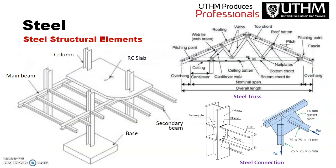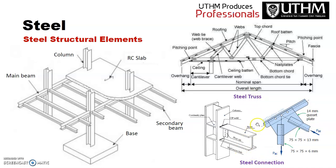In a steel structural system, the slab transfers loads to the secondary beams, secondary beams transfer to the main beam, and the main beam transfers to the column, which transfers the load to the base. An example of steel connections includes a gusset plate connection.